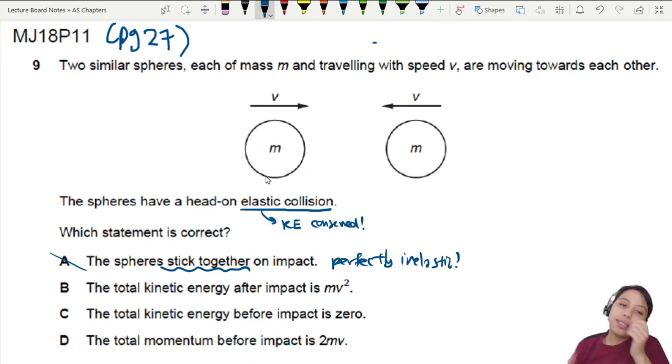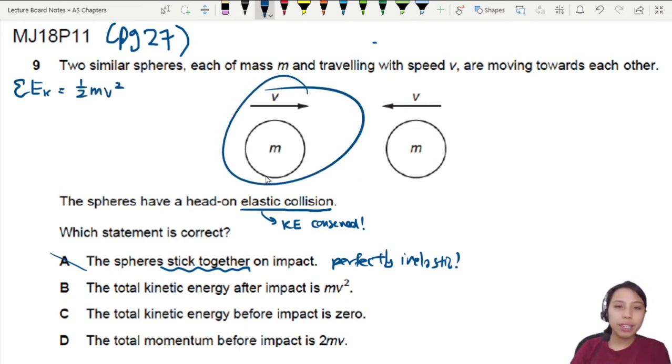Let's see what we can cancel else. C says the total kinetic energy before impact is zero. Oh, this one I can calculate. Total kinetic energy means I add together half mv squared from the first object. And then I add another one, half mv squared from the second ball.